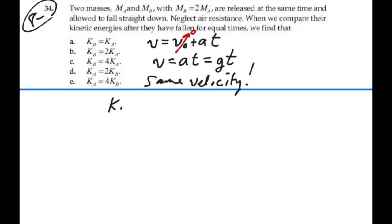Hence the kinetic energy of A is going to be one half mass of A velocity squared, while the kinetic energy of B is going to be one half mass of B, same velocity squared.